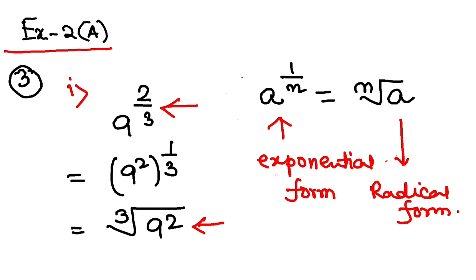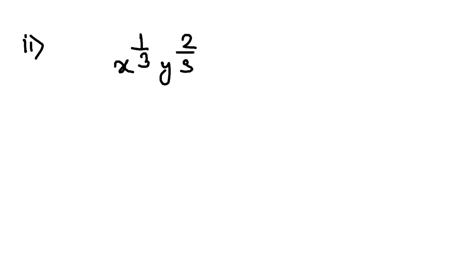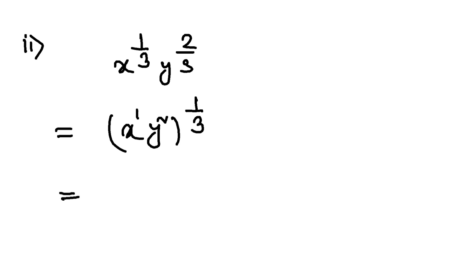Now let us go to question 3.2. The question is x to the power 1 by 3 times y to the power 2 by 3. Since both have the same denominator 3, I can write it as x to the power 1 times y squared, whole to the power 1 by 3. This becomes the cube root of x times y squared — that is, the cube root of xy squared. Very easy.